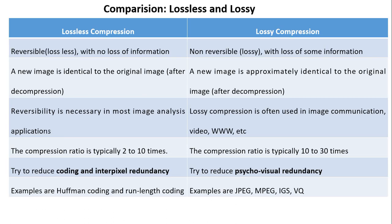Comparing lossless and lossy compression: lossless is reversible — with no loss of information, we can recover the original data exactly from the compressed format. Lossy is non-reversible, with permanent loss of some information. A decompressed image is identical to the original in lossless, whereas in lossy it is only approximately identical. The compression ratio for lossless is typically 2 to 10 times, while for lossy it is typically 10 to 30 times. Lossless tries to reduce coding and interpixel redundancy, while lossy reduces psycho-visual redundancy.